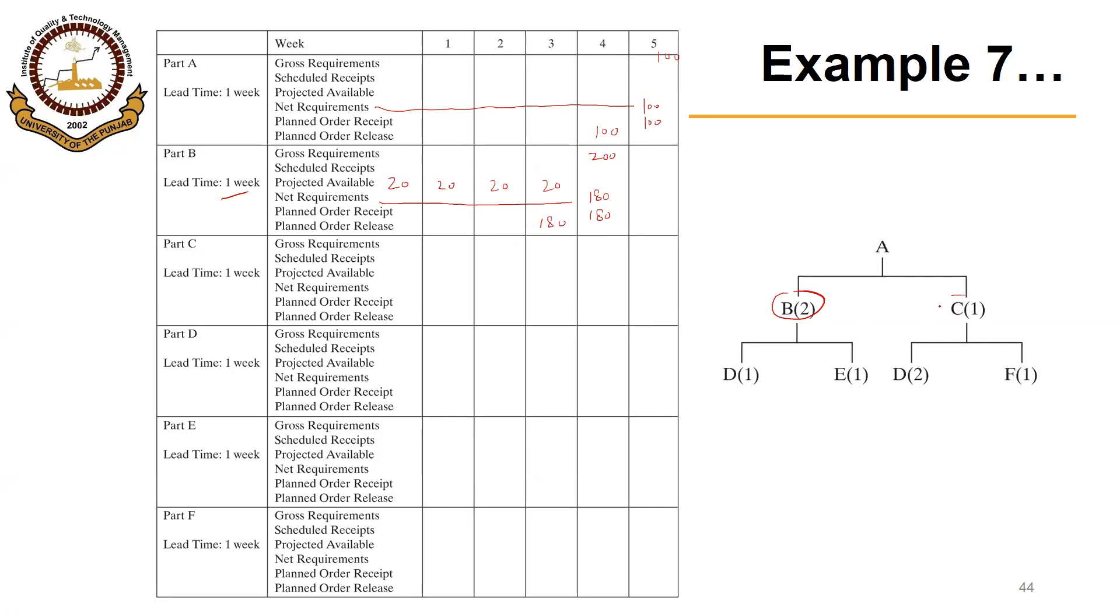Next we have C. C is also the component or sub-assembly of A, so its gross requirements will also be determined by the planned order release of A, so that will be 100 here in week 4. No on-hand, no scheduled receipts, so net requirements will also be 100. Planned order receipt of 100, so planned order release of 100 in week 3, because the lead time is 1 week.